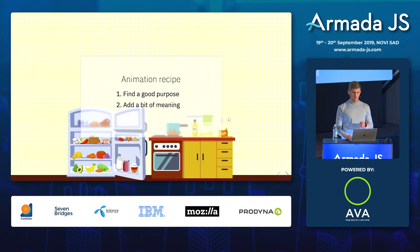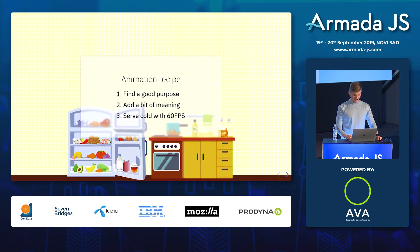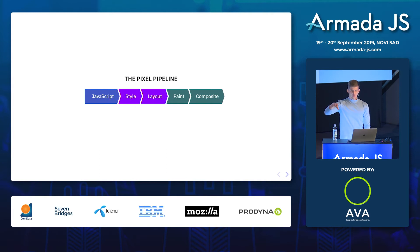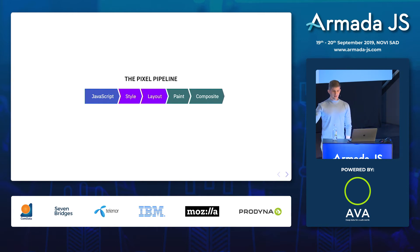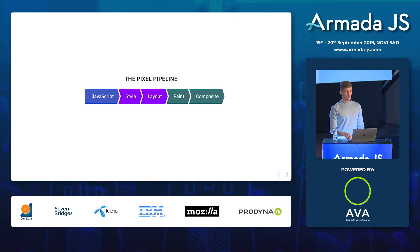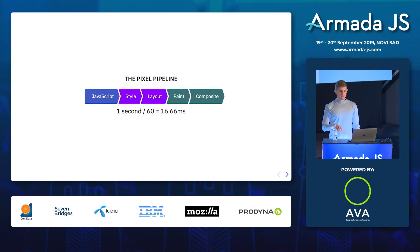The last step is serve code with 60 FPS — this is the technical part of my talk. Here is the pixel pipeline. Whenever we animate something frame by frame, we run JavaScript that changes styles. Then the browser has to recalculate styles, run layout, paint, and compose layers. If we want 60 FPS, that means for each of these steps, we have 16.6 milliseconds to get it right.